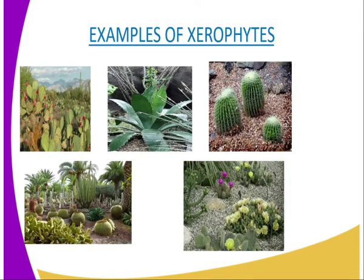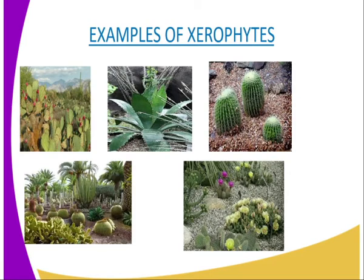Eighth, some plants have deep roots to absorb water from deep in the soil — for example, the acacia tree. Other plants have superficial roots which grow close to the soil surface to absorb water after a light shower of rain. Ninth, some plants store water in large parenchyma cells contained in succulent stems and leaves. Lastly, some xerophytes have a very short life cycle to evade drought, and some survive as seeds or underground perennating organs.